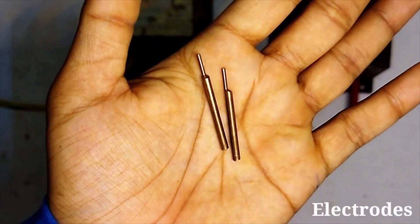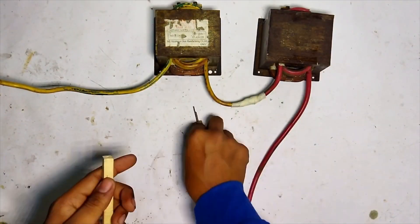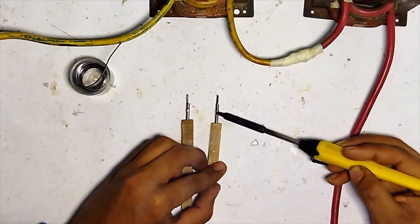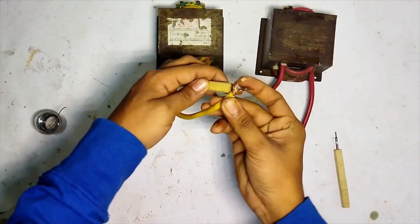These are alloy electrodes. Make sure you are using good electrodes, or else the quality of the spot weld will be much poorer. Now connect them to the end of the transformers.